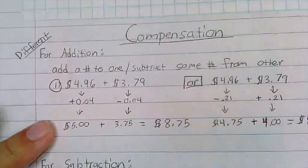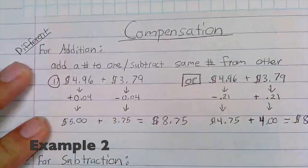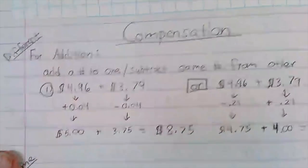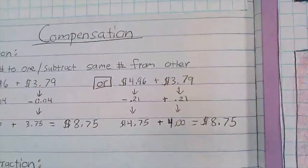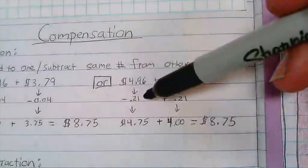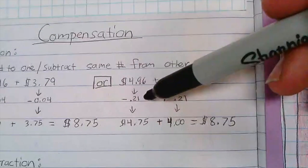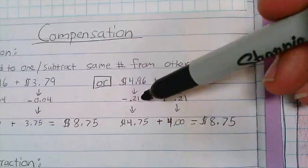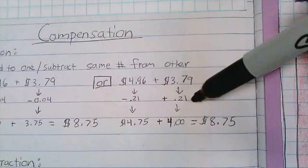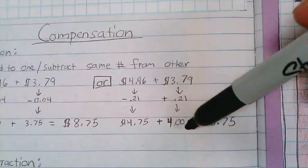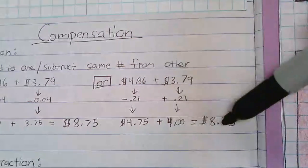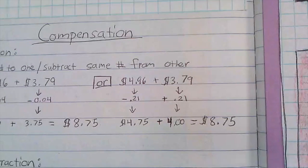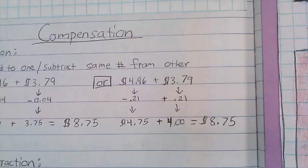Here's another example. In this case I have $4.96 plus $3.79, same numbers, but instead I'm gonna subtract 21 cents to get this down to $4.75. Because I subtracted here, I'm gonna add here 21 cents to get up to $4.00, and I'm gonna add those two numbers together and I get $8.75.